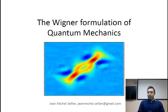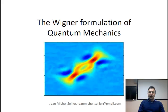In this lecture we will talk about the Wigner formulation of quantum mechanics. This is an alternative formulation which is not very popular, but it is totally equivalent to the Schrödinger formulation of quantum mechanics, which is the standard formulation.